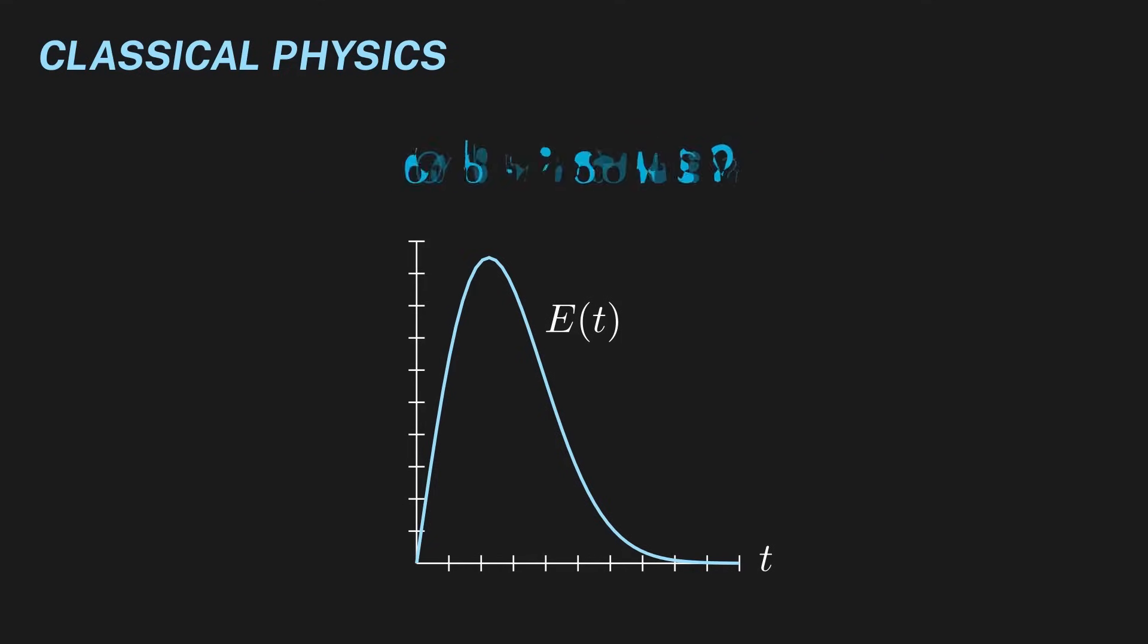Now, this may seem kind of obvious. I mean, what else would we use? Well, to see when a model like this one breaks down, let us analyze a real physical system and compare the classical and quantum worlds.